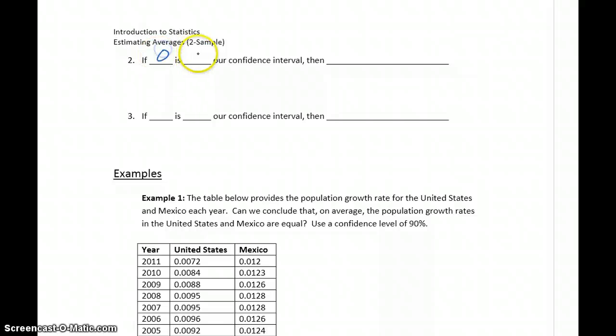If zero is less than our confidence interval, then we would conclude that the first parameter is larger. Looking at our confidence interval, that would be a confidence interval that is strictly positive. So if all values in our interval are positive, that means that the first parameter is larger than the second, based off our data.